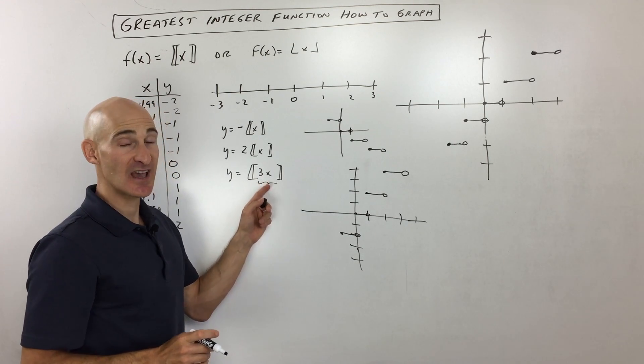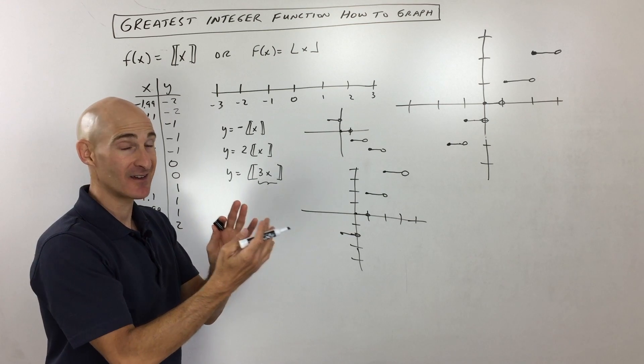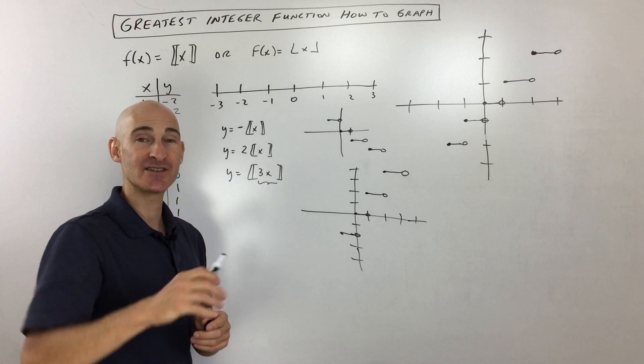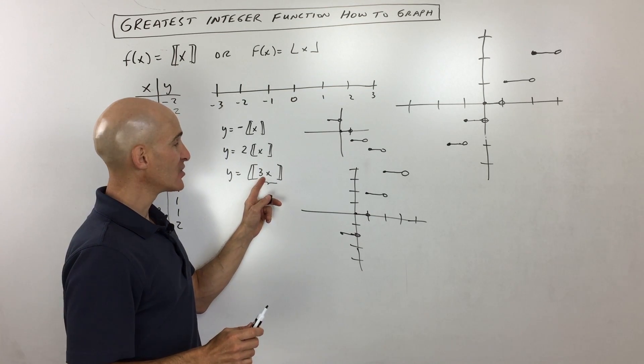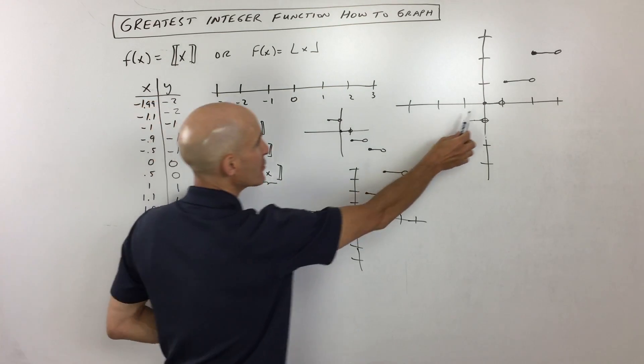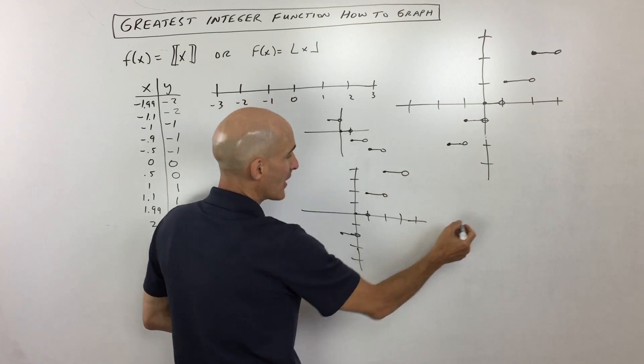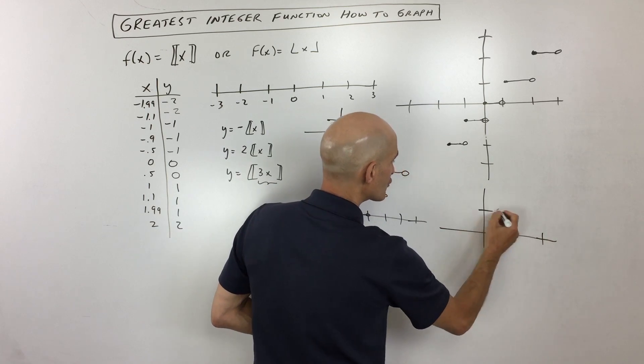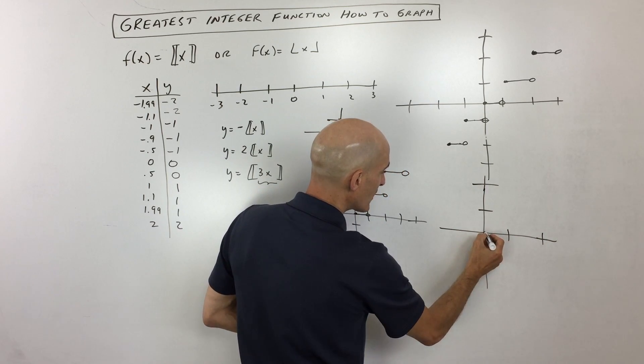The one that's grouped with the x actually has the opposite effect. So what this is actually going to do is actually going to make these stairs over here 1 third as long. So if I can sketch that here for us, what this would look like, if I can just draw a few of these here for us, is you would go like this.